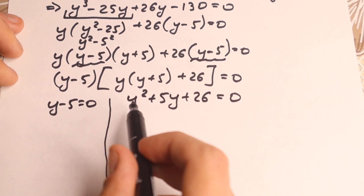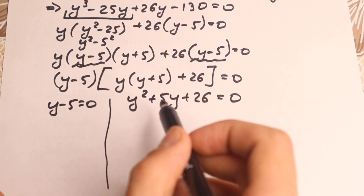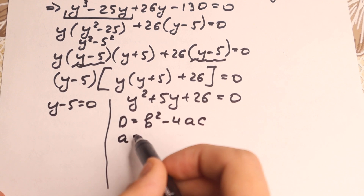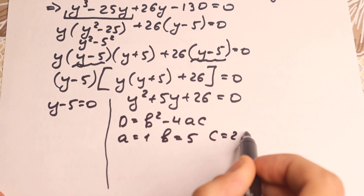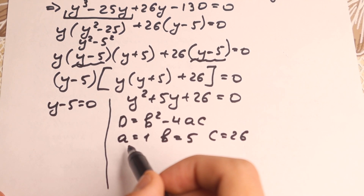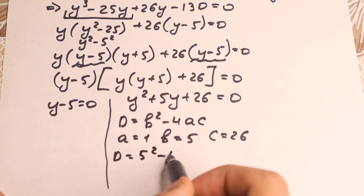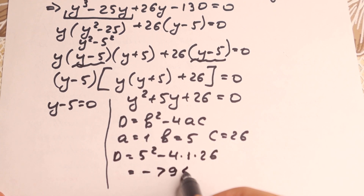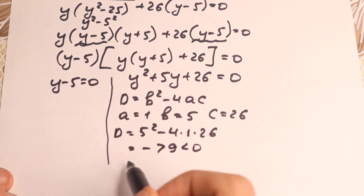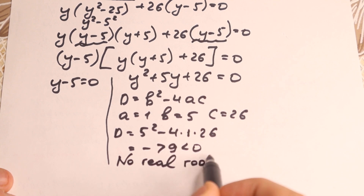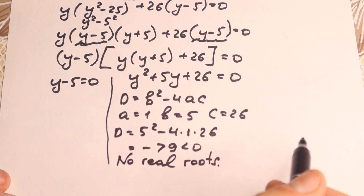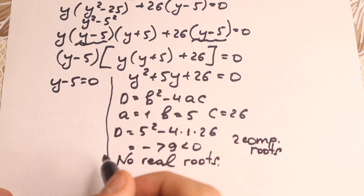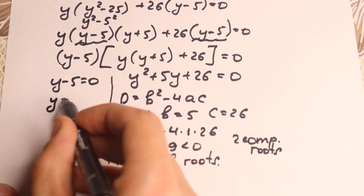We have two cases. For the quadratic y squared plus 5y plus 26 equal to zero, let's find the discriminant: D equals b squared minus 4ac. With a equal to 1, b equal to 5, c equal to 26, we get D equal to 25 minus 104, which is minus 79 — less than zero. So no real roots from this case, only two complex roots. From the left factor: y minus 5 equal to 0, giving y equal to 5.